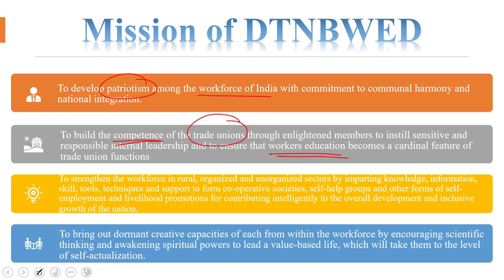DTNBWED also strives to strengthen the workforce in rural, organized, and unorganized sectors by imparting knowledge, information, skills, tools, techniques and support to form cooperative societies, self-help groups (SHGs), and other forms of self-employment and livelihood promotion for inclusive growth of the nation. Additionally, it aims to bring out dormant creative capacities of each worker by encouraging scientific thinking and awakening spiritual powers — attempting to lead a value-based life that takes workers to the level of self-actualization.